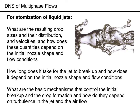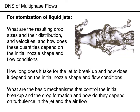For atomization of liquid jets we want to know the size and velocities of the resulting drops and how their sizes and velocities are distributed, how these quantities depend on the nozzle shape and the flow conditions, and how long it takes for the jet to break up. What are the basic mechanisms that control the initial breakup and drop formation, and how do they depend on turbulence in the jet? DNS gives us the complete flow field at every instant in time and space, and we can therefore compute any average or statistical quantity that we desire.